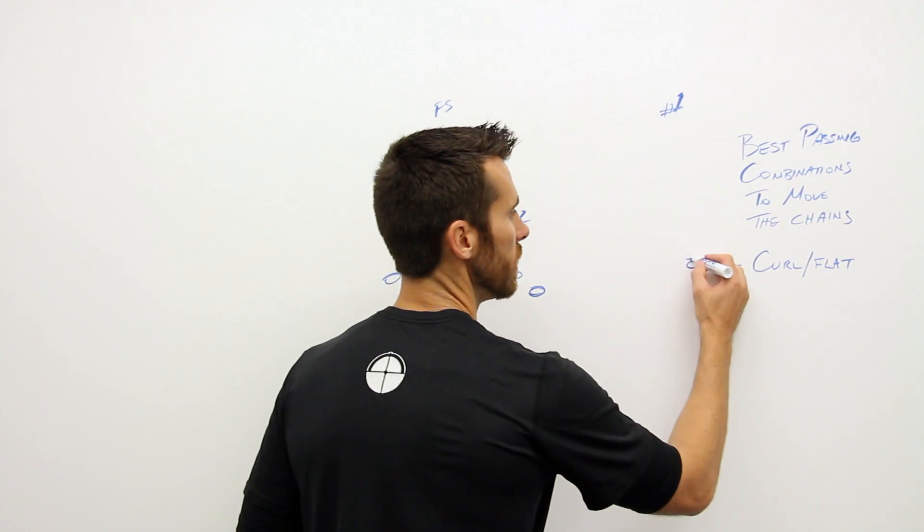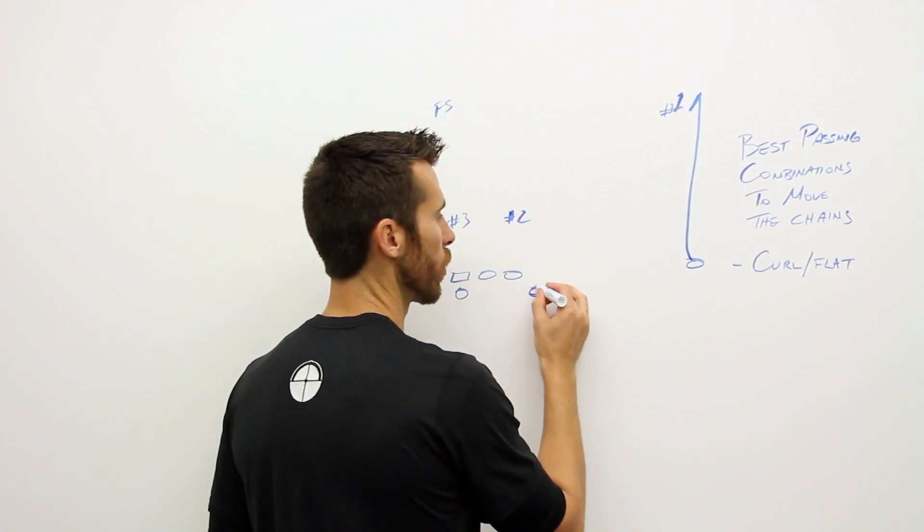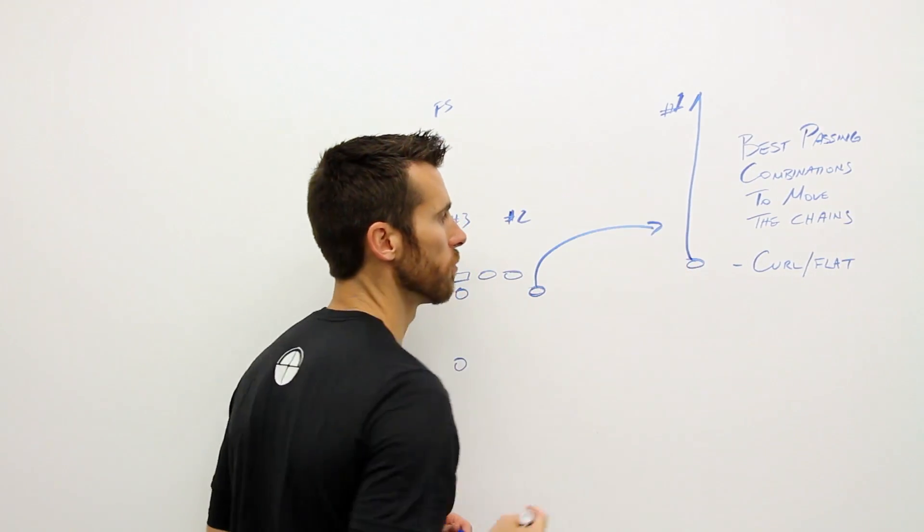Now the curl-flat combination is pretty simple, and that's the point. We want to run the curl from number one, we want to run the flat from number two.